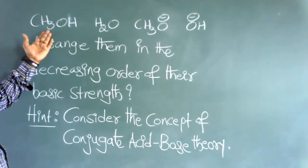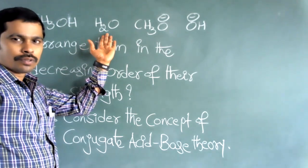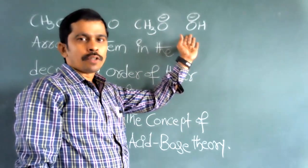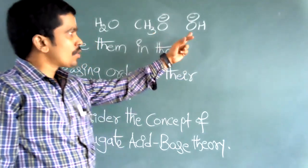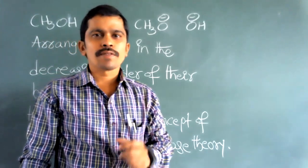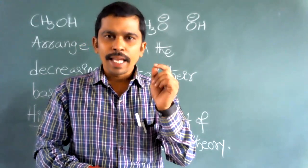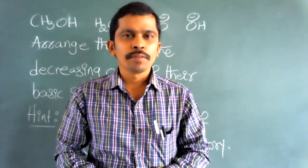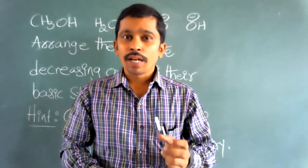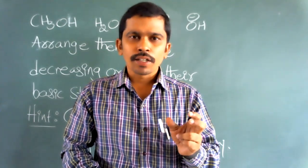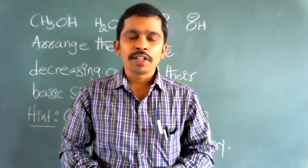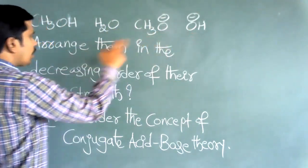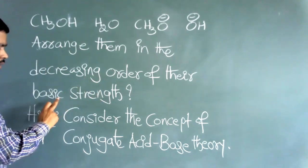We are going to compare the acidic nature of these species. First one: CH₃OH, methyl alcohol. Second one: H₂O, water. Third one: CH₃O⁻, methoxide ion. And the fourth one: OH⁻, hydroxide ion. So all these are going to have acidic nature as well as basic nature. What is meant by acidic nature? The ability to donate a proton or the ability to accept an electron pair. And what is meant by basic nature? The ability to donate OH⁻ ions or the ability to donate a lone pair of electrons. These species are given and we are going to arrange them in decreasing order of their basic strength.